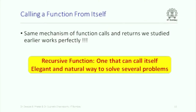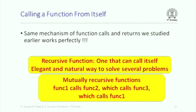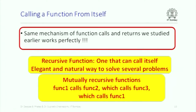What about mutually recursive functions? Function 1 calls function 2, which calls function 3, which calls function 1. Perfectly possible — that is mutual recursion where recursion is not so very obvious. What is important is that the same mechanism of function calls and returns works perfectly for this.